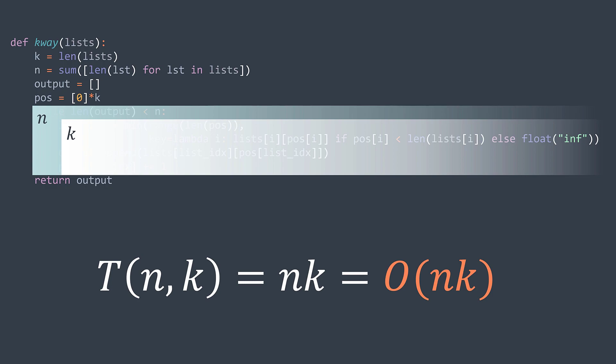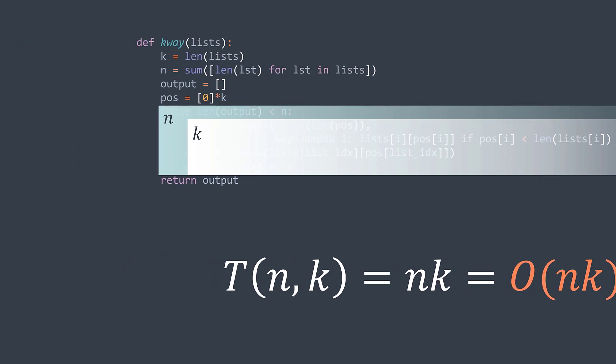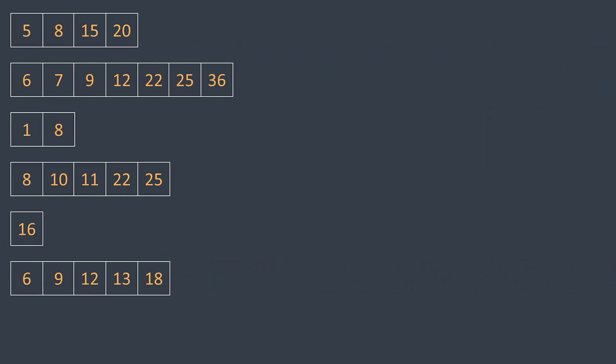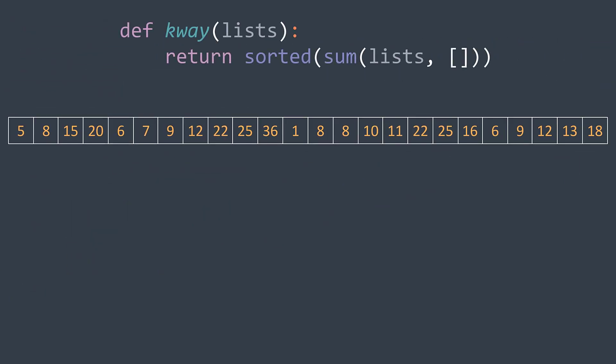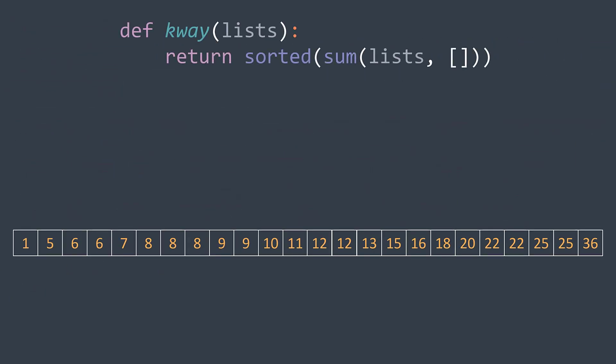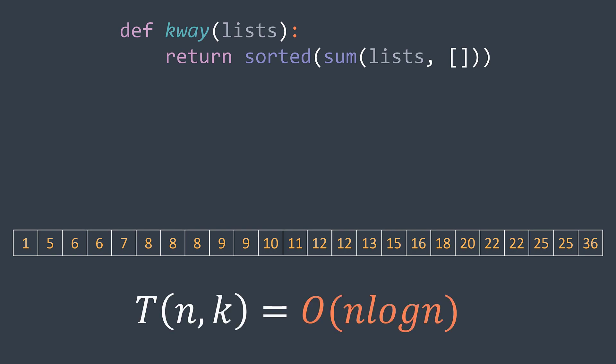This is not the only solution. We can also, for example, just concatenate the lists together and sort the result. This gives an O(n log n) time complexity because we're sorting n elements.